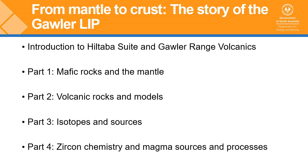This talk will be divided into four parts. After a brief introduction to the Hildibus Suite and the Gawler Range Volcanics, we'll look at how we use mafic rocks and their geochemistry to understand the composition and source of the mantle. We'll then look at volcanic rocks and how we can use their geochemistry and isotope geochemistry to better understand magmatic evolution and make some comments on models for formation. We'll then look at isotopes and how they can inform us about different mantle and crustal end-member sources and the interaction between them. The last section looks at zircon geochemistry as an additional layer of information to better understand those magmatic processes and sources.